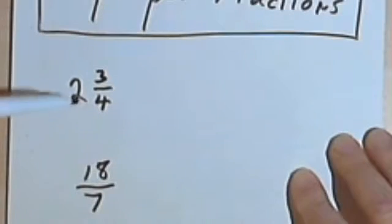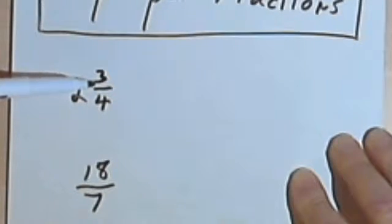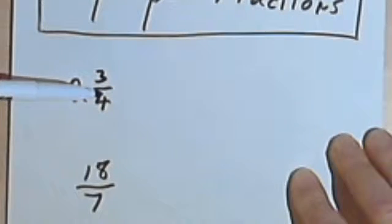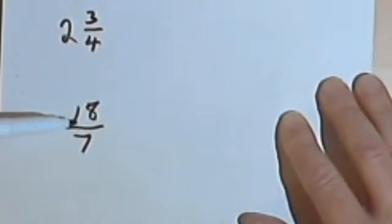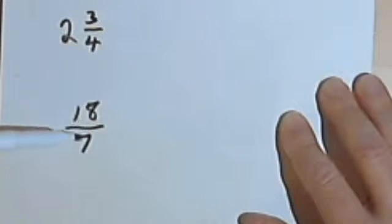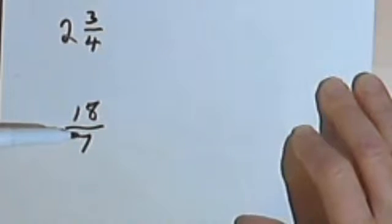Now sometimes you have to convert something like 2 and 3 quarters into an improper fraction. And sometimes you're going to find you have to take an improper fraction and convert it to a mixed number. So let's see how we convert from one to the other.